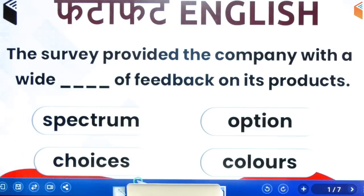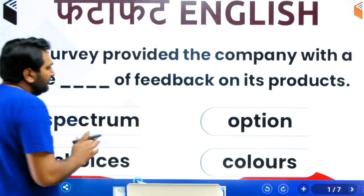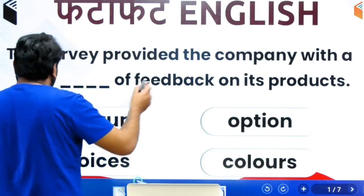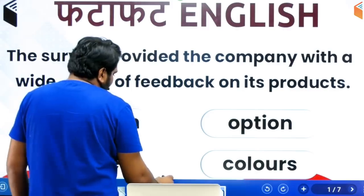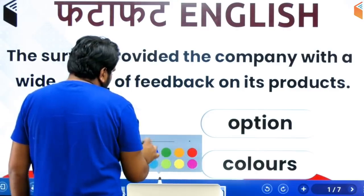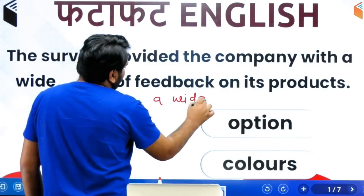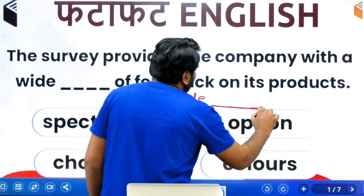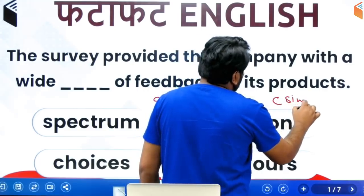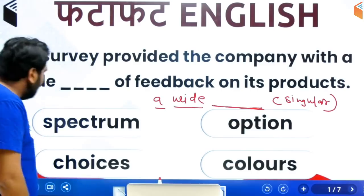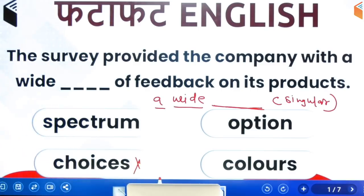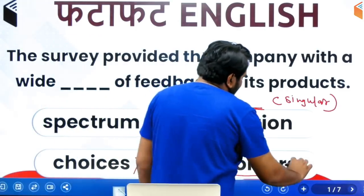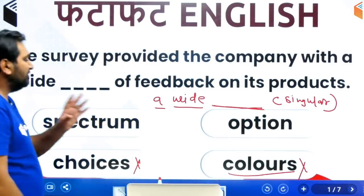If you put a little thought into it, you can instantly reject or eliminate two options. This is the construction — you have got 'a wide,' and 'wide' is the adjective. So the obvious thing is that the option filling the blank must be a singular noun. Now, looking at the choices: 'Choices' has a plural noun — eliminated. 'Colors' is also written in plural form — also eliminated. So choices and colors are in any case not an option.